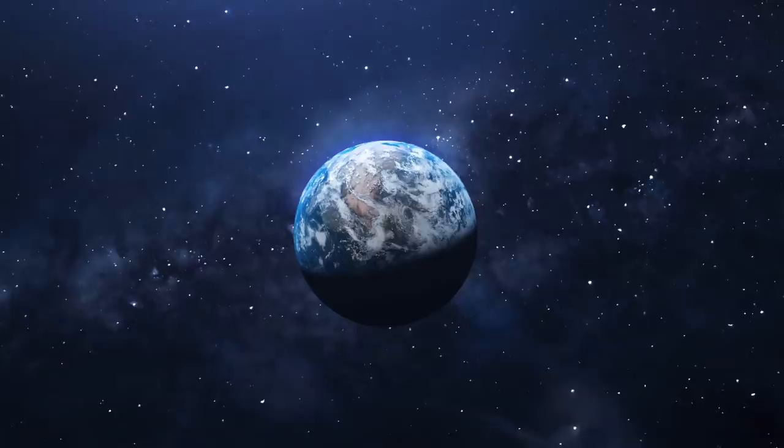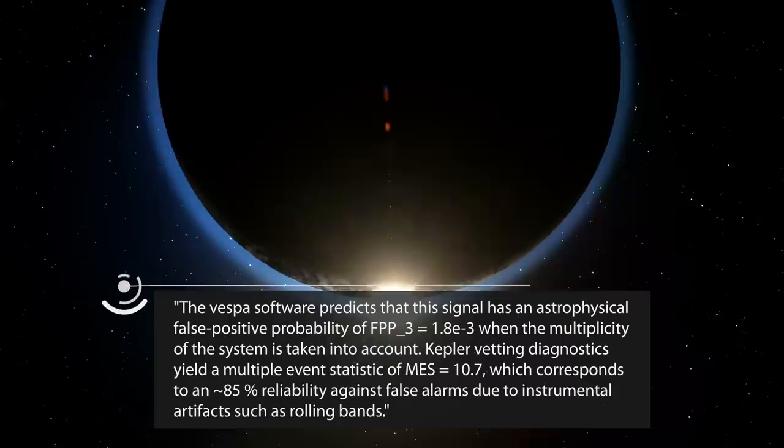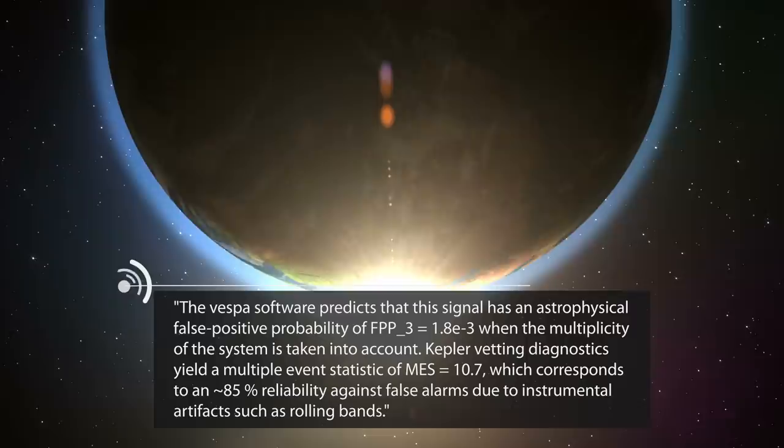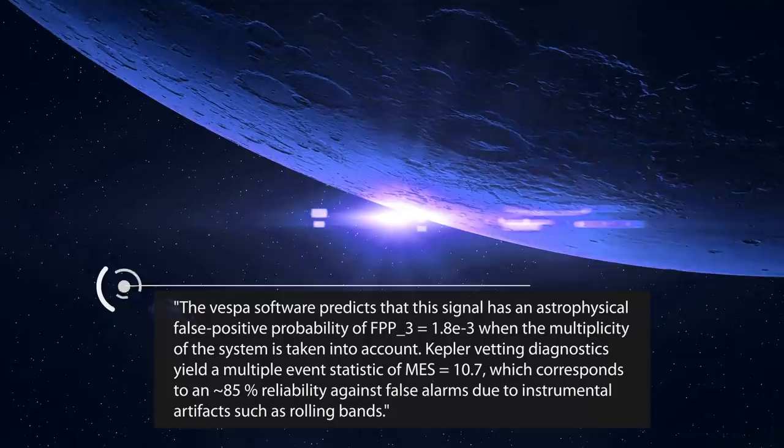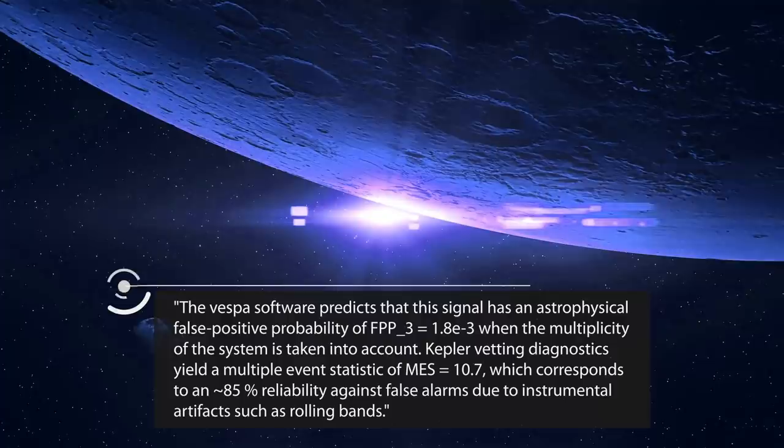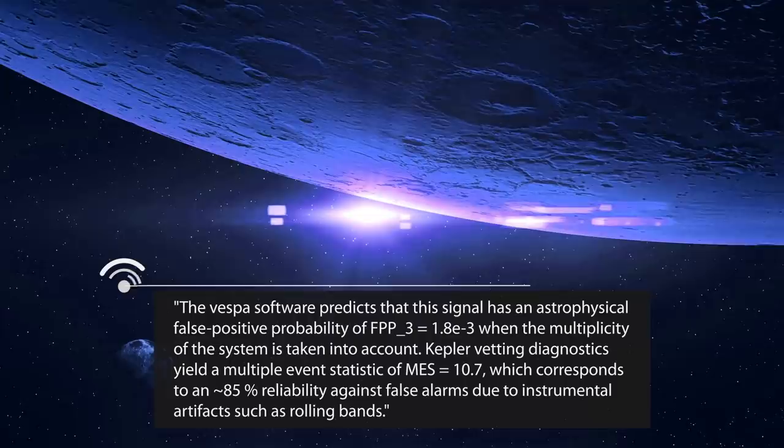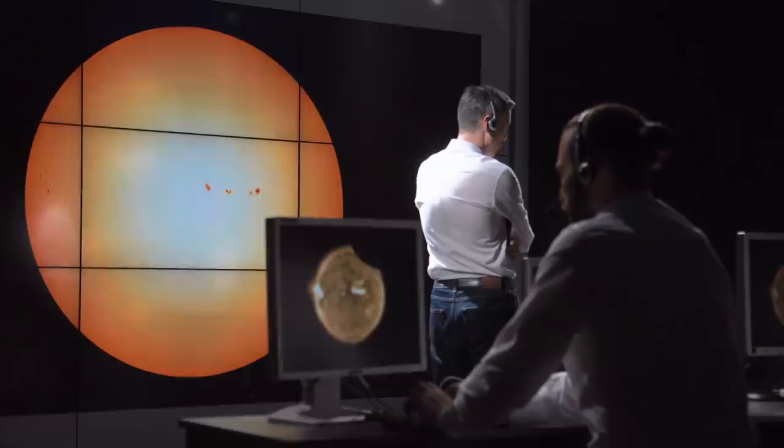From the paper, the Vespa software predicts that the signal has an astrophysical false-positive probability of FPP-3 equals 1.8e-3 when the multiplicity of the system is taken into account. Kepler vetting diagnostics yield the multiple-event statistic of MES equals 10.7, which corresponds to an approximate 85% reliability against false alarms due to instrumental artifacts such as rolling bands.